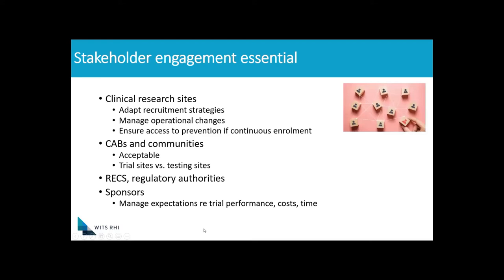In all of these approaches, what's going to be important is that we engage with the range of stakeholders who have worked with us throughout the implementation of trials in these multiple settings. For clinical research sites, they're going to have to adapt their recruitment strategies, manage the operational changes and what that means for clinic flow, and make sure they can access prevention for people who may no longer be eligible for enrollment if screening is continuous. For CABs and communities, there's going to need to be work done to educate people about this new approach, to make sure it is acceptable, and that people understand the issues around excluding people with chronic infection, not using the trial sites as testing sites, but rather referring people who want testing or follow-up on their HIV status within healthcare facilities.